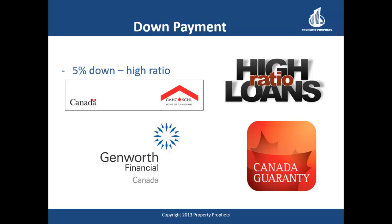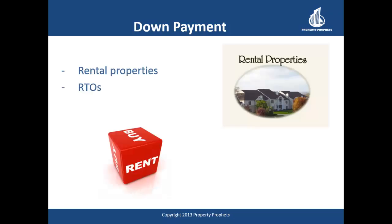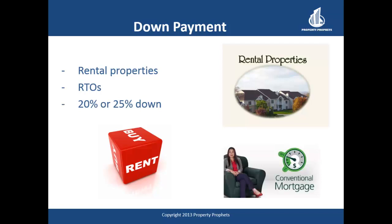As real estate entrepreneurs building our businesses and portfolios by acquiring non-owner-occupied properties — rental properties and rent-to-owns — those will require a down payment of at least 20%, and in many cases these days 25% down. These are known as conventional mortgages. This does not trigger any insurance premium as high-ratio loans do; however, some lenders have their own internal insurance programs and may charge a small premium even on a conventional mortgage. These mortgages, when given by the A-lending community of banks and banking affiliates, will typically have the lowest rates and are given to borrowers who meet the lender's qualification standards.